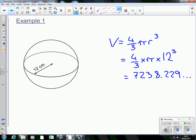And that's going to give us the answer when we type in our calculator, 7238.229 and so on. Now let's look at it to three significant figures again, 1, 2, 3.